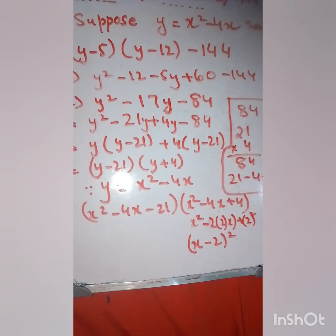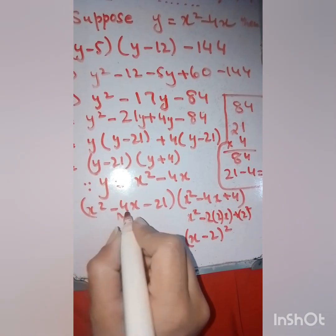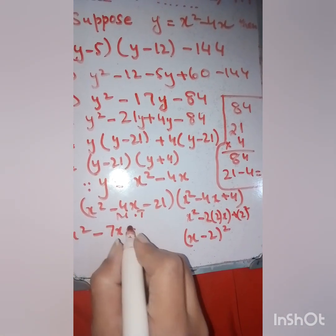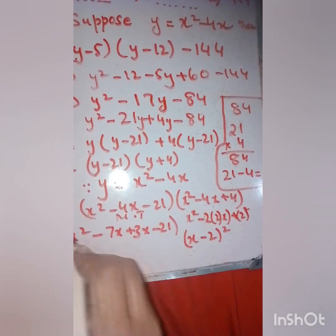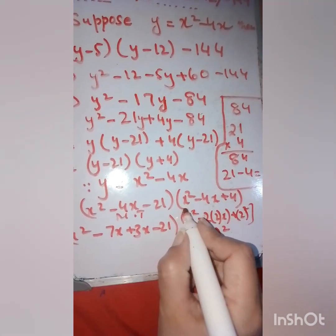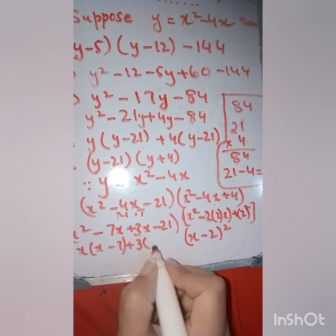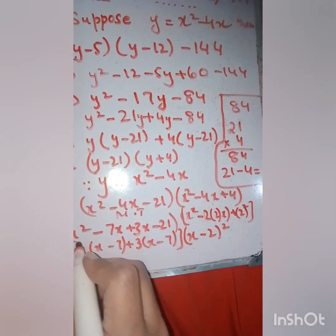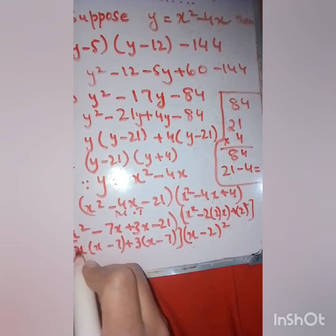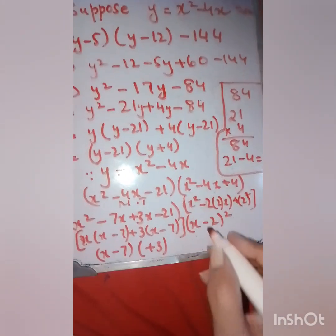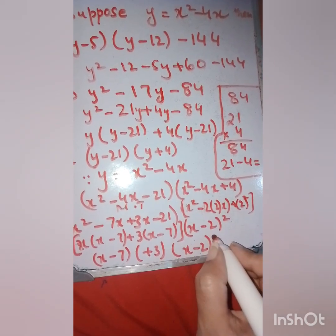For x² minus 4x minus 21, I cannot apply that perfect square formula, so I will use the middle term. Factors of 21 are 7 and 3. So I write x² minus 7x plus 3x minus 21, which gives x(x minus 7) plus 3(x minus 7), giving (x minus 7)(x plus 3). The final answer for the first expression is (x minus 7)(x plus 3)(x minus 2)².